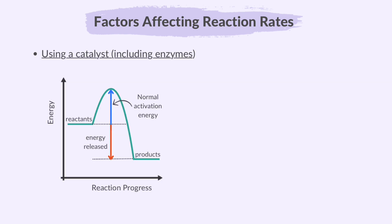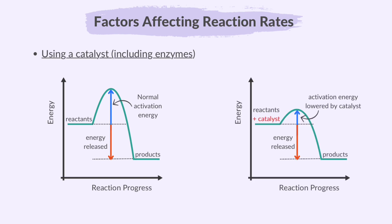Without a catalyst, the graph typically shows a higher activation energy barrier that the reactants must overcome before the reaction can proceed, meaning the reaction requires more energy input to start. With a catalyst, the graph shows a lower activation energy barrier. The catalyst provides an alternate pathway for the reaction to occur which requires less energy input to start. As a result, the reaction proceeds more readily and at a faster rate.